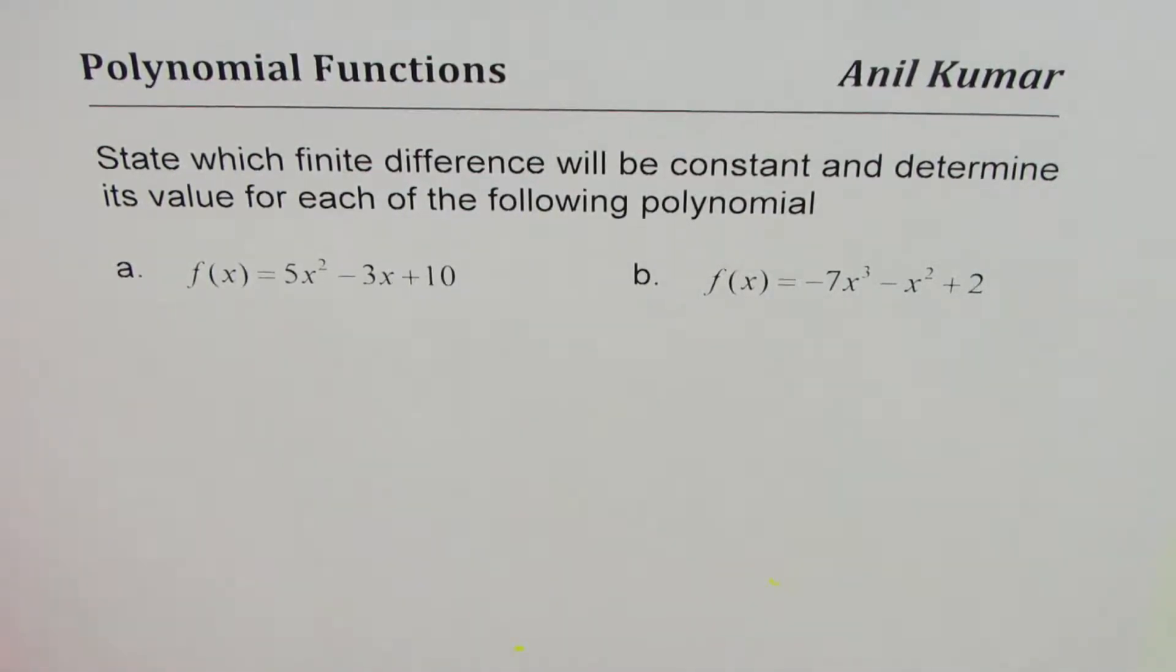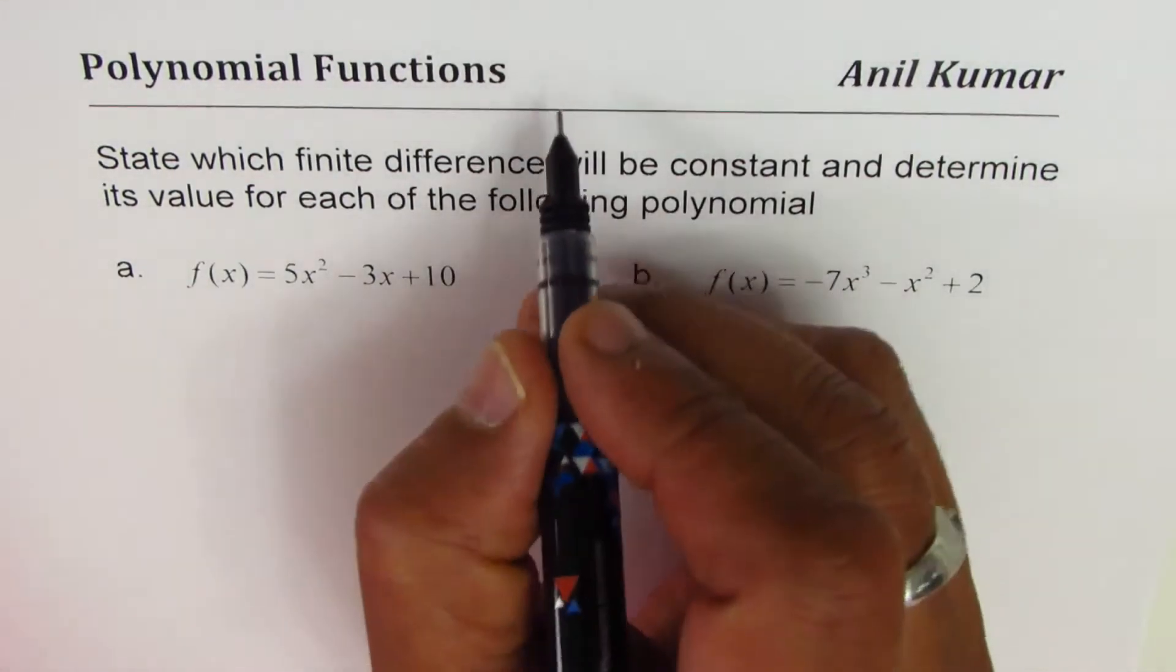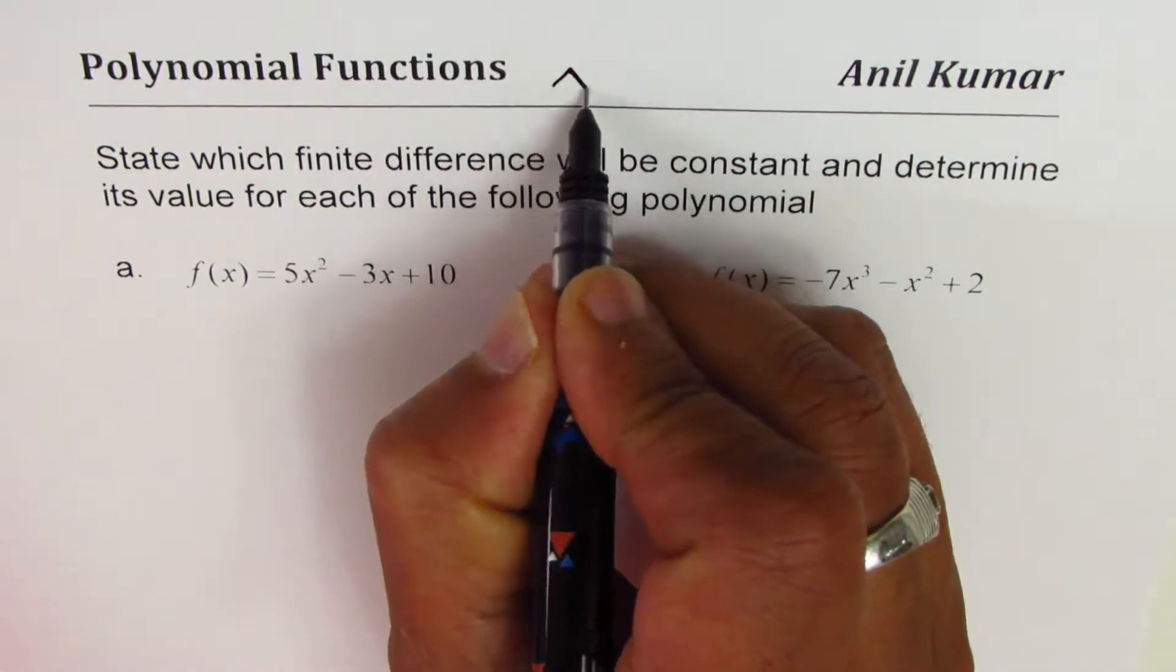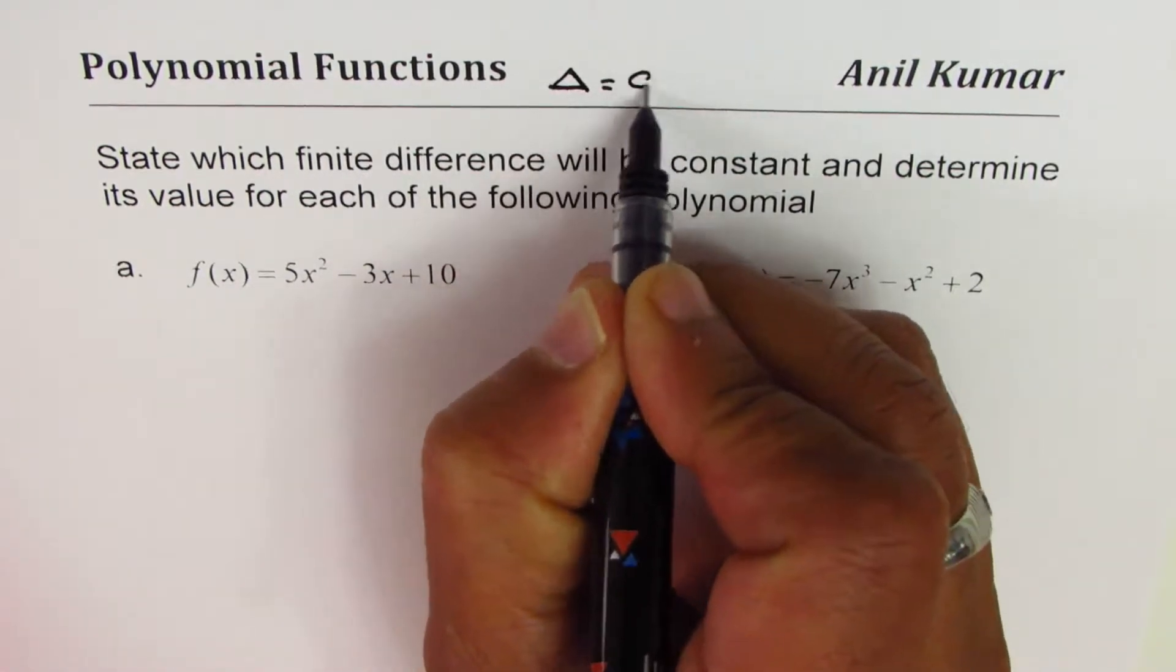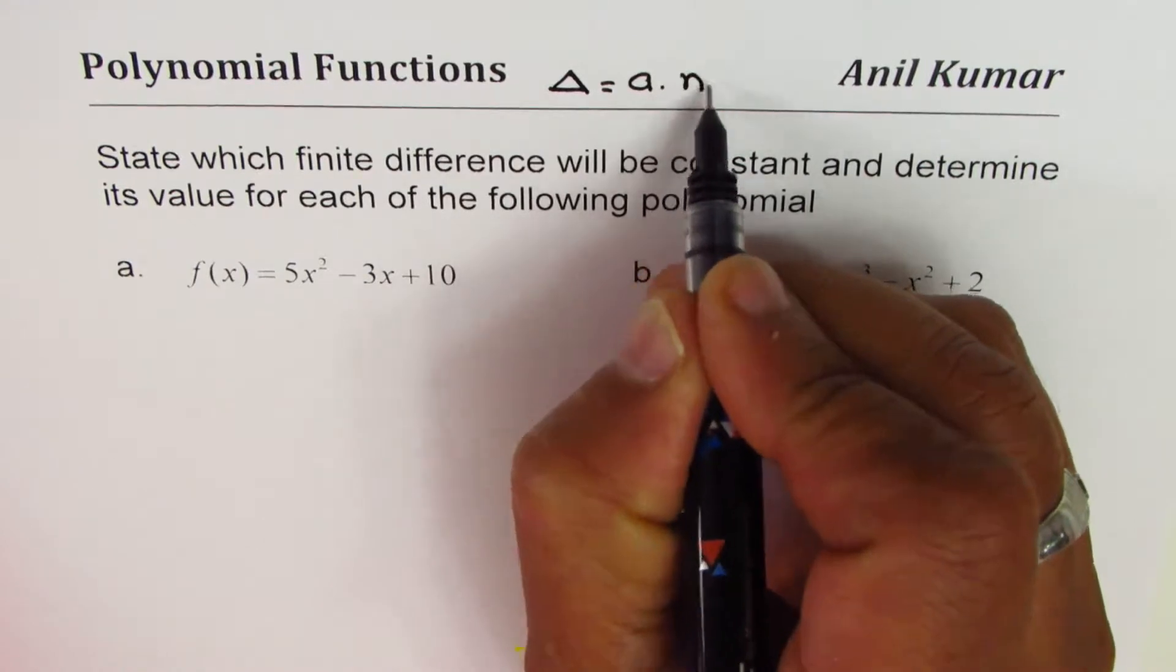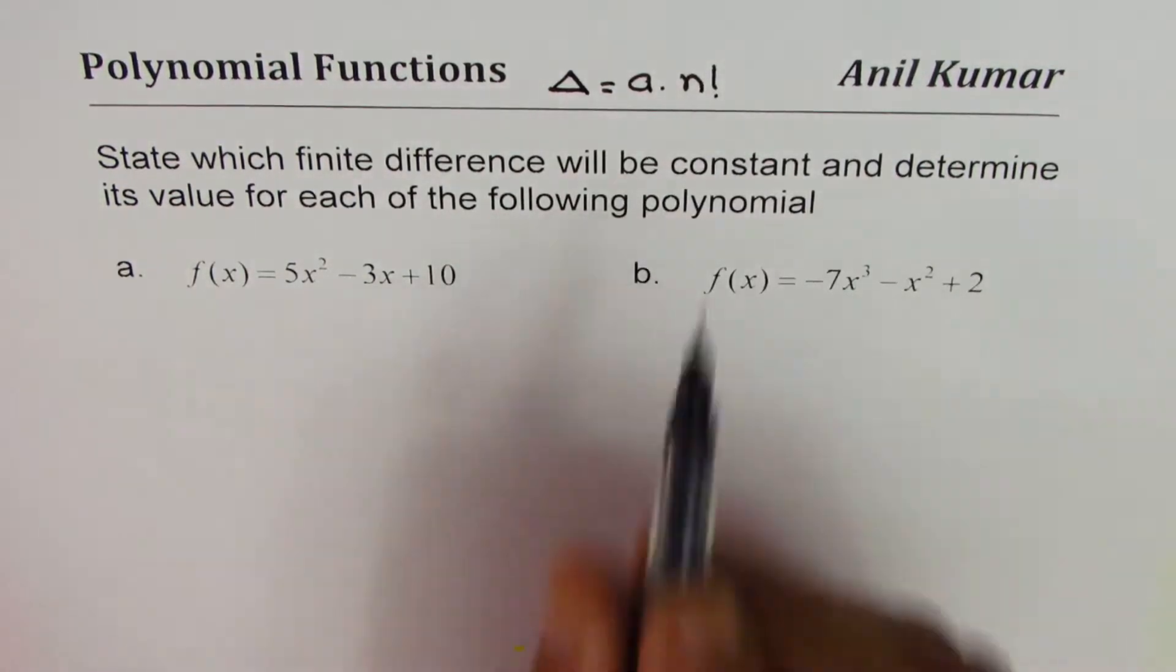Now let me also give you a relation between leading coefficient, constant finite difference, and the degree. A constant finite difference is product of leading coefficient and factorial of degree. That's the relation.